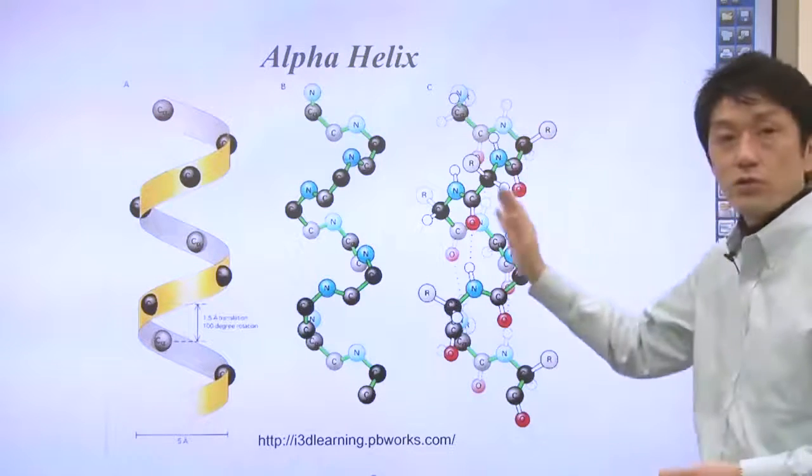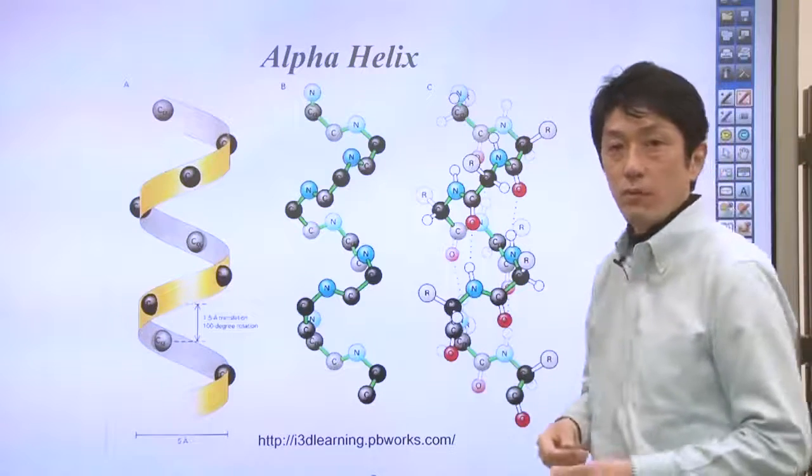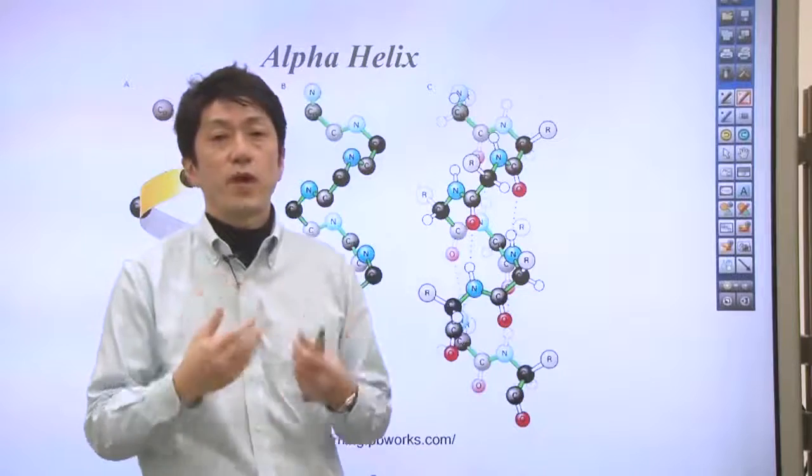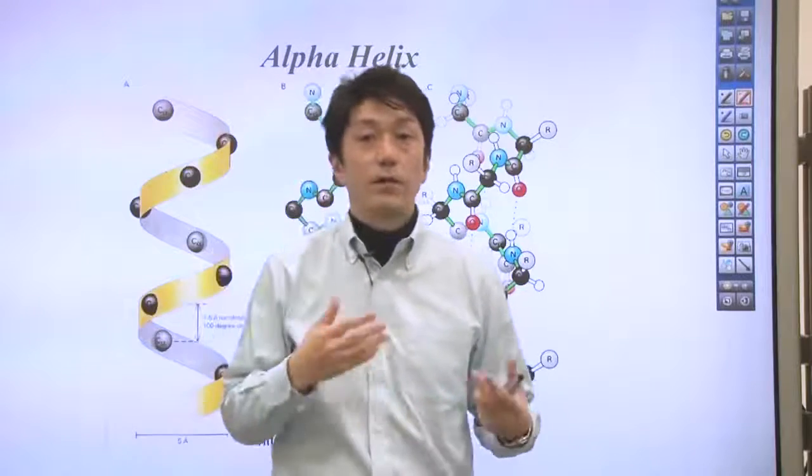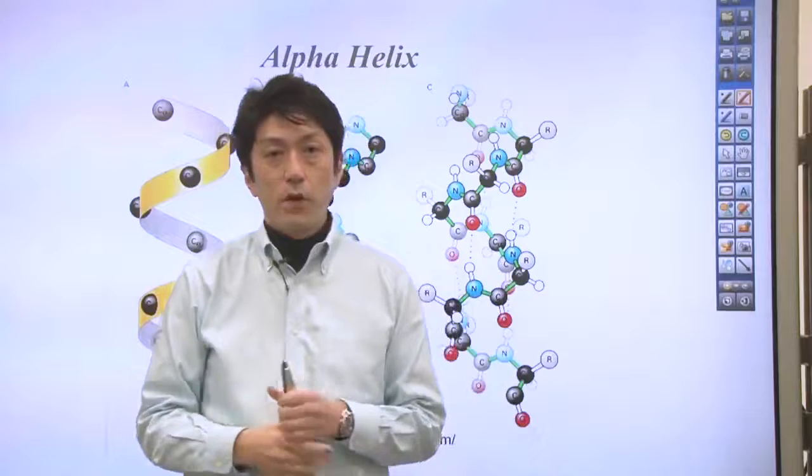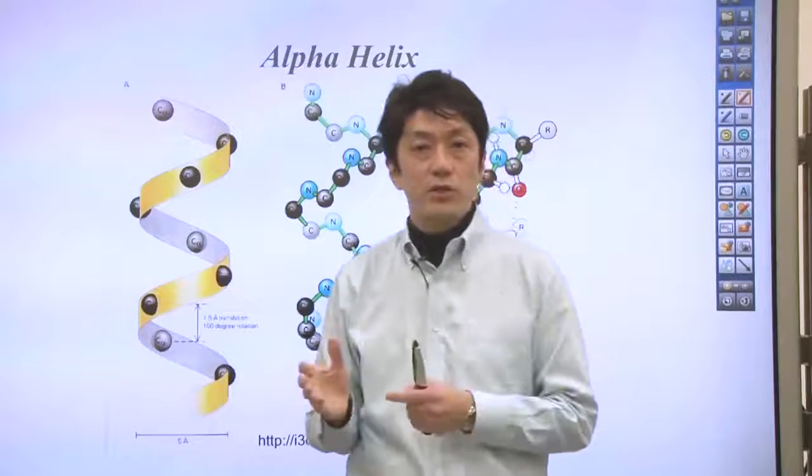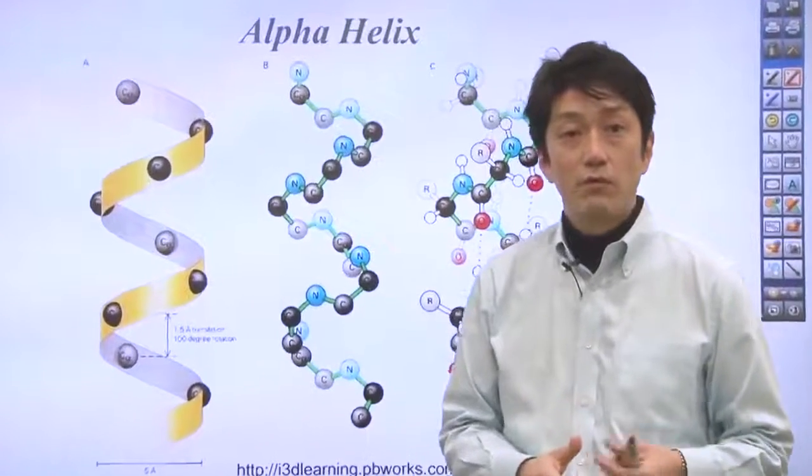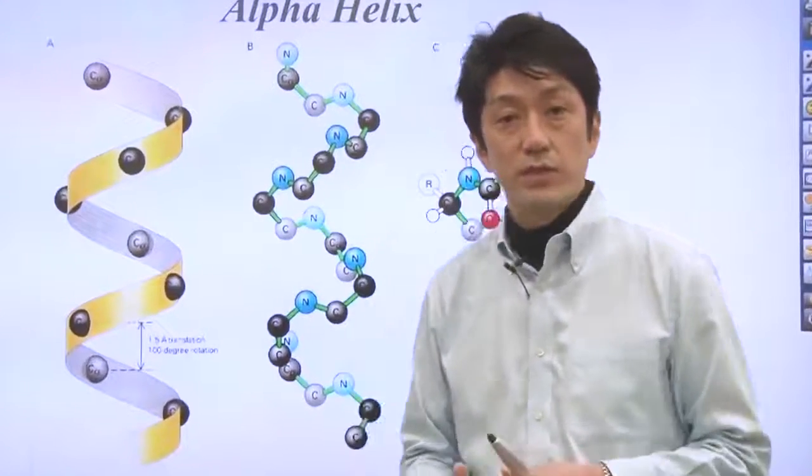This helical structure is quite stable and explains the structure stability of proteins found in hair and hemoglobin. Dr. Pauling published the structure of alpha helix on February 28, 1951, which was his 50th birthday.